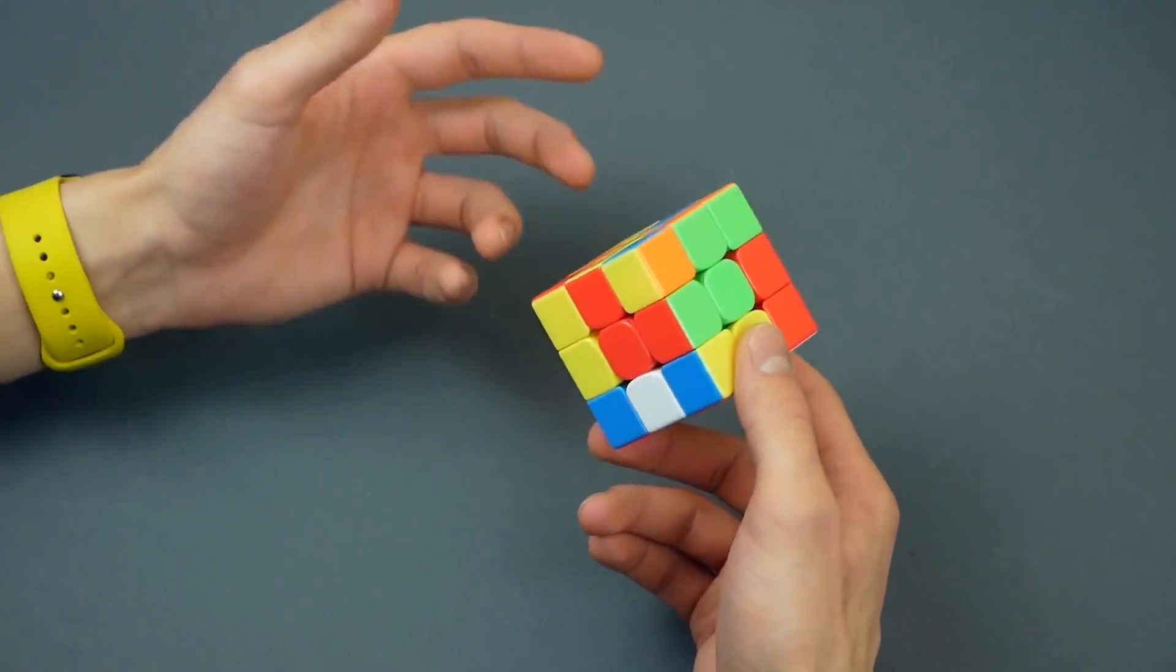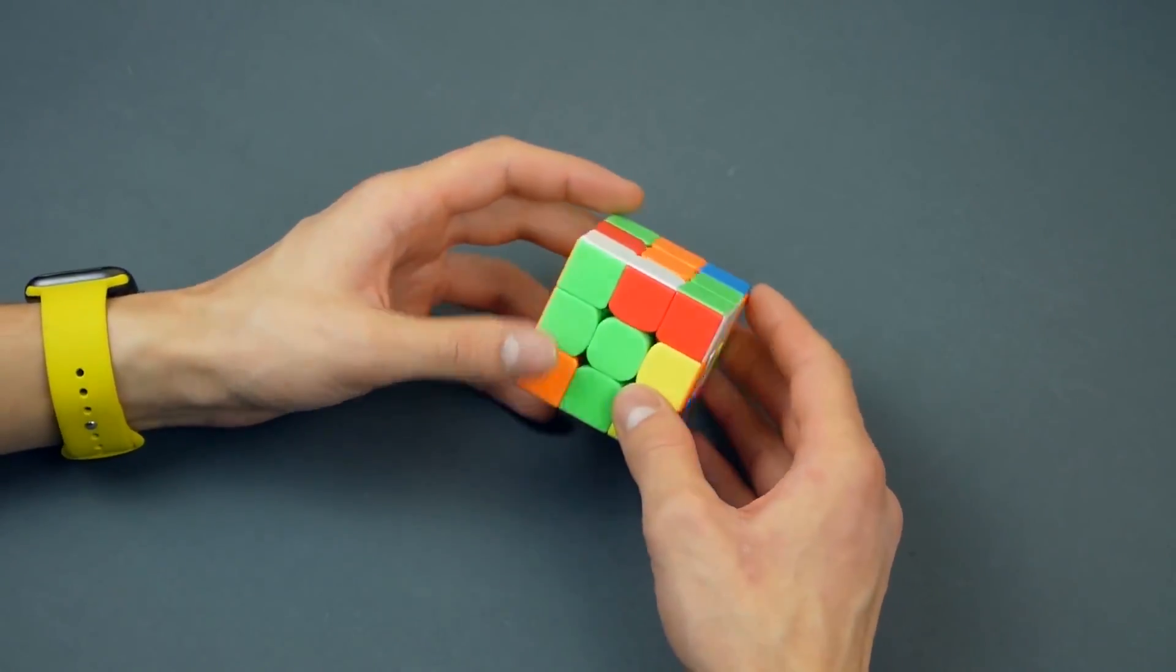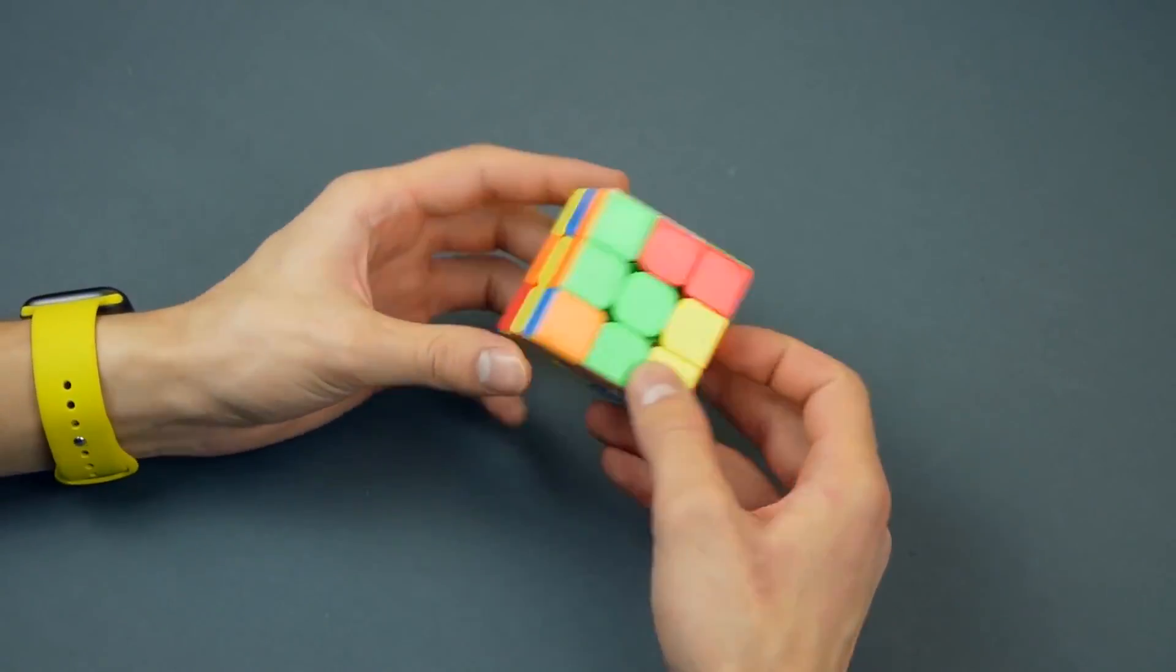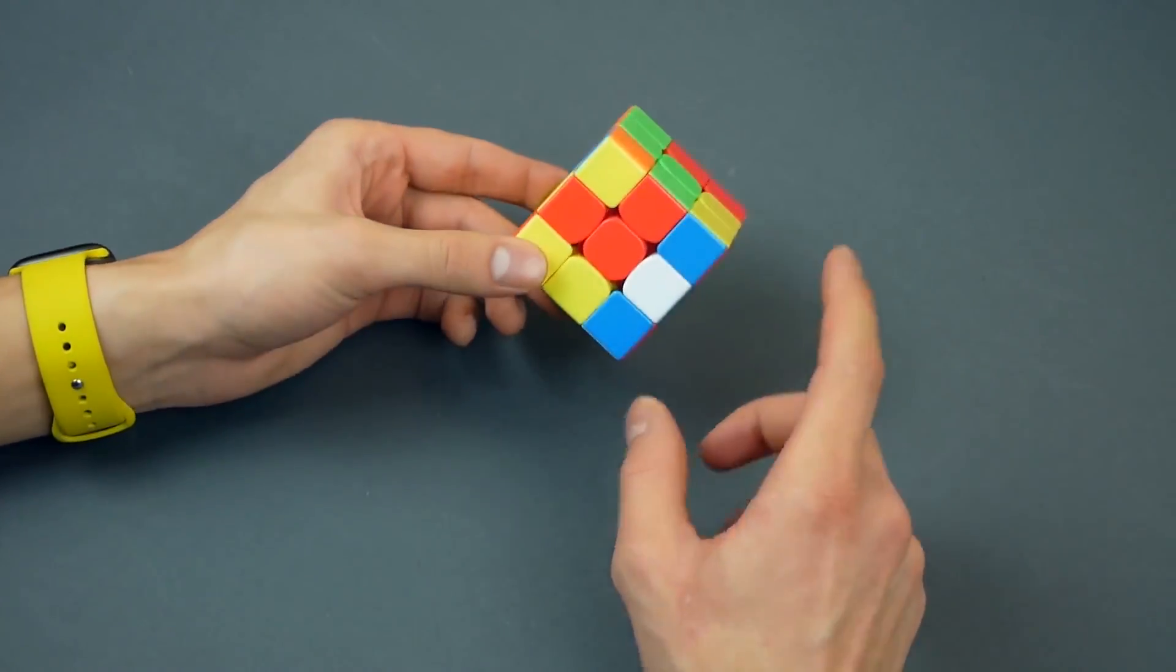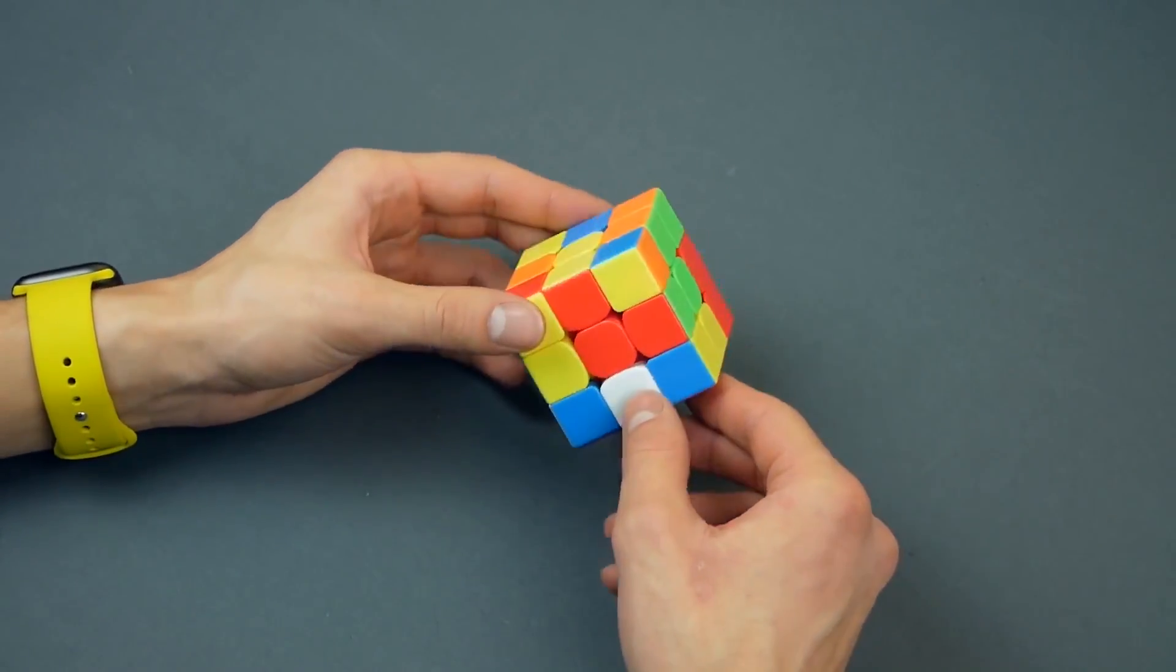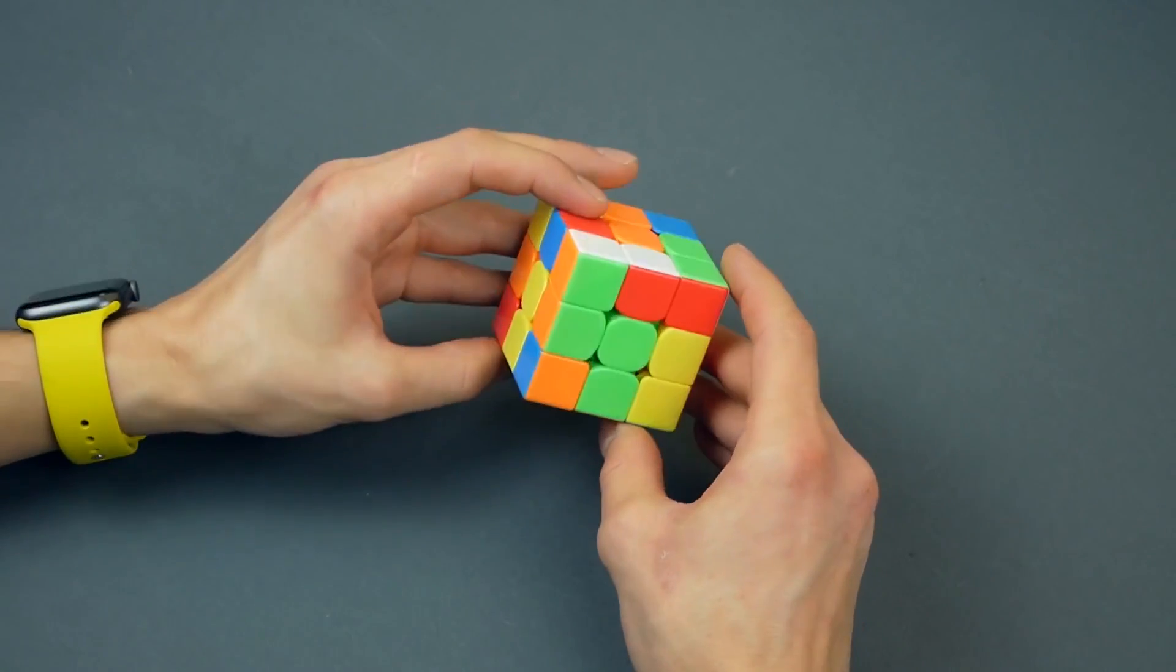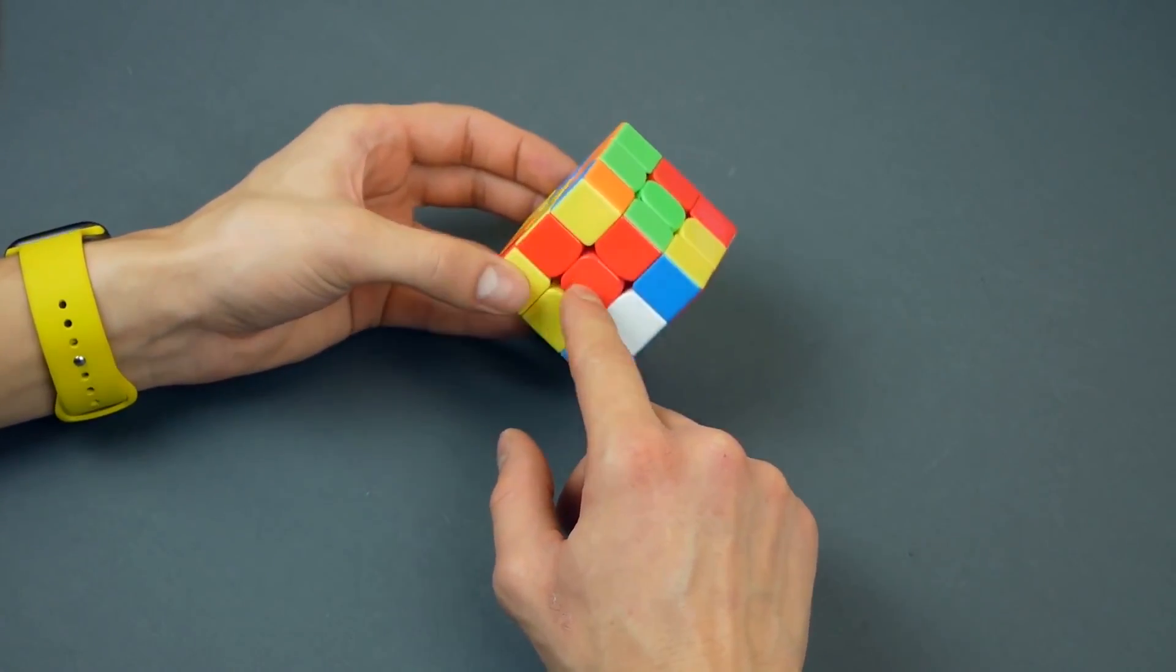So, at first glance the cube looks completely chaotic, all elements are scattered randomly. But a professional Yusheng Du understands that if you look more closely, you can find some ways to a quick solve. And he notices them. He decided to start with red color. Not a common decision. Usually speedcubers prefer starting with white, but professionals can start with any color.